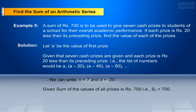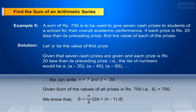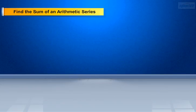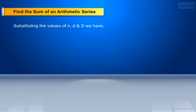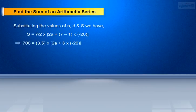Given that the sum of the values of all prizes is 700 rupees, that is S_n equals 700. As we know the sum formula S equals n by 2 into 2a plus n minus 1 into d. Substituting the values of n, d, and S in the formula, we have 700 equals 7 by 2 into 2a plus 7 minus 1 into minus 20. This implies 700 equals 3.5 into 2a plus 6 into minus 20.